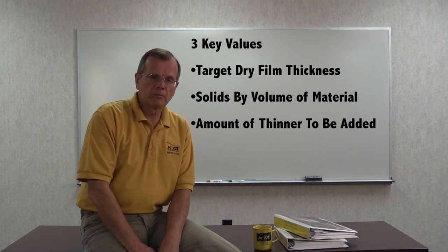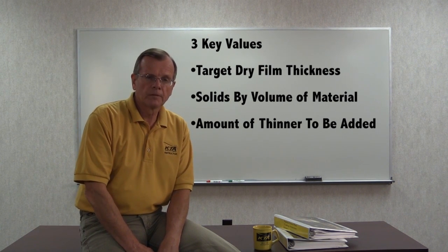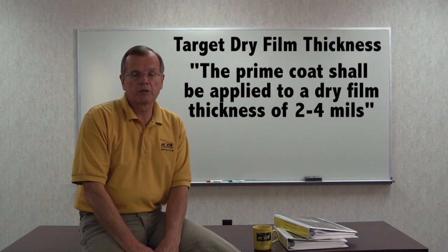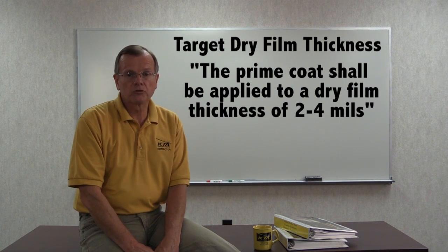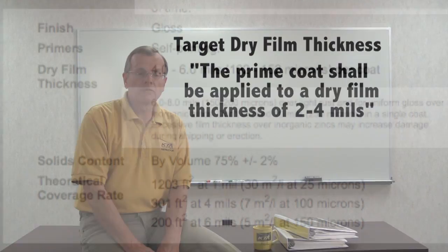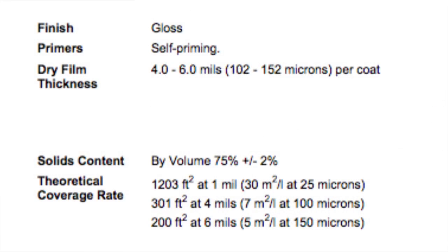Now, where do those values come from? The first, the target dry film thickness, you'll find from the specification. For example, you might say the prime coat should be applied to a dry film thickness of 2 to 4 mils. If the specification is silent, suggested thickness ranges can also be found in the product data sheet, but the specifier should be contacted in this case to confirm that that is the desired thickness for the project.